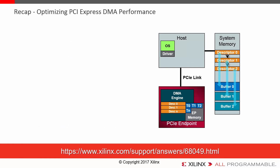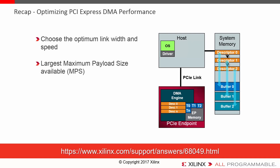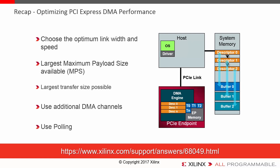To recap: from the system side, check and get the optimum link width and speed for your data transfer needs. If you can choose a system, pick one with the largest possible maximum payload size, as that makes a huge difference in performance. On the DMA side, choose the largest transfer size possible for your application, then use additional DMA channels to reach the performance level you need. Finally, use polling mode as an option to get better performance. All of this is available in answer record 68049, which has a write-up going through these different charts. Thanks for watching.